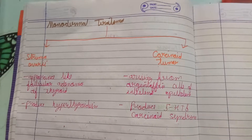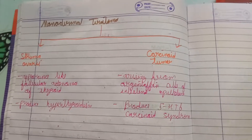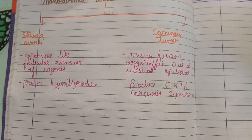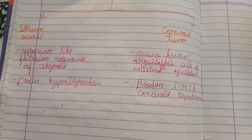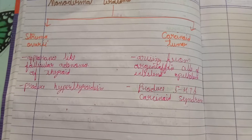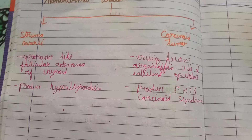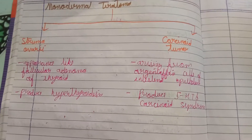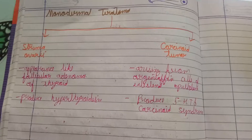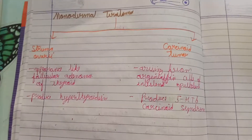Monodermal teratoma is divided into two types: struma ovarii and carcinoid tumor. Struma ovarii gives the appearance of follicular adenoma of the thyroid and can produce hyperthyroidism. Carcinoid tumor arises from the argentaffin cells of the intestinal epithelium and produces 5-HT, causing carcinoid syndrome. A third type combines both struma ovarii and carcinoid features.